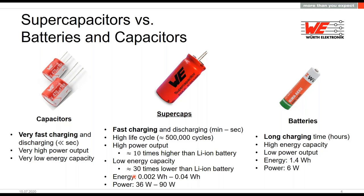When you draw energy out of a supercapacitor the voltage falls linearly, which I'll show later. Compared to traditional capacitors the power output is much bigger, but traditional capacitors have higher rated voltages. Batteries have higher energy density and a constant voltage but low power output and relatively low cycle life — as you know, phone batteries have limited charge cycles.